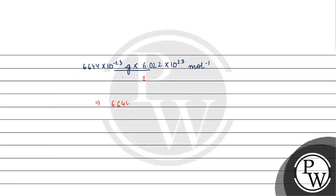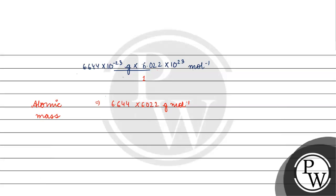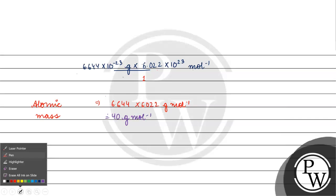So we get 6.644 into 6.022 gram per mole. The atomic mass works out to 40 gram per mole.